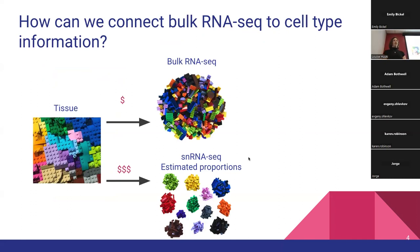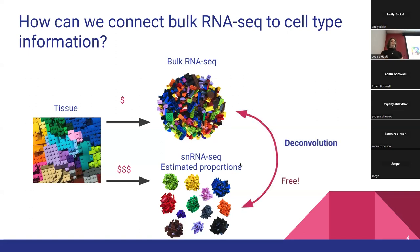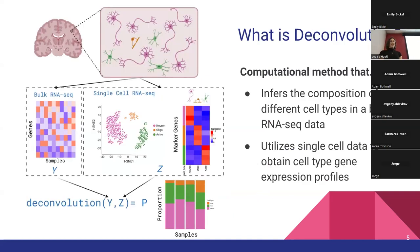So how do we connect bulk RNA-seq, which is our more abundant data type, with this more fine-resolution single nucleus RNA-seq? The bulk RNA-seq is much more abundant in terms of resources, while single nucleus RNA-seq is much more expensive to produce and we have much fewer sample sizes. One way we can connect these two different data types and learn more about the cell types that make up our bulk RNA-seq samples is through a process called deconvolution — a computational method that uses single nucleus RNA-seq cell type gene expression profiles to infer cell type proportions from bulk RNA-seq.